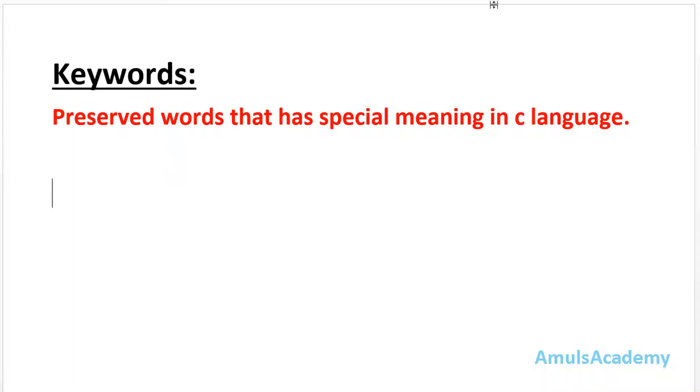And the example for keywords are if, this is a keyword, else, or we can write switch, for. These are all the keywords, that means these are the words which has predefined meaning. So when I use this if in my program, compiler will come to know why I use this.